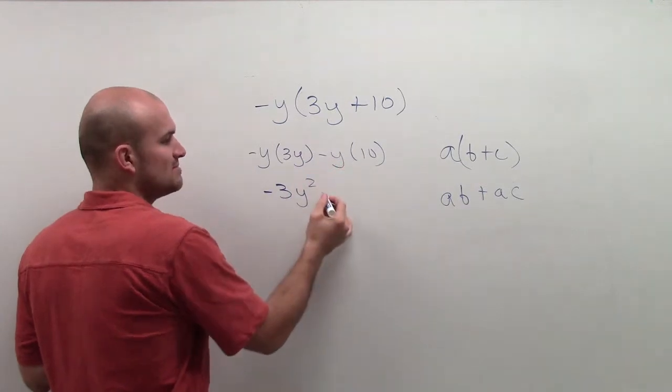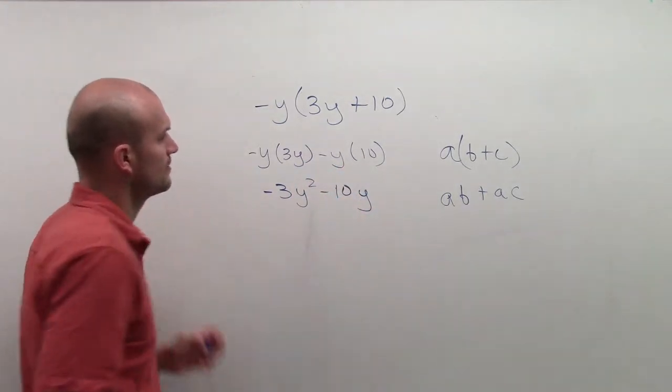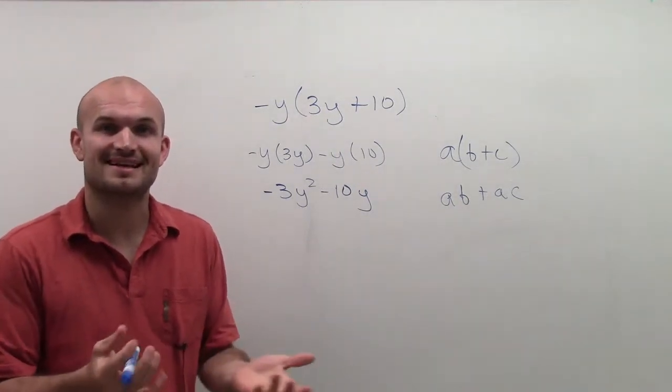And then I have negative y times 10, which we can write as negative 10y. And there we go, that's your simplified answer.